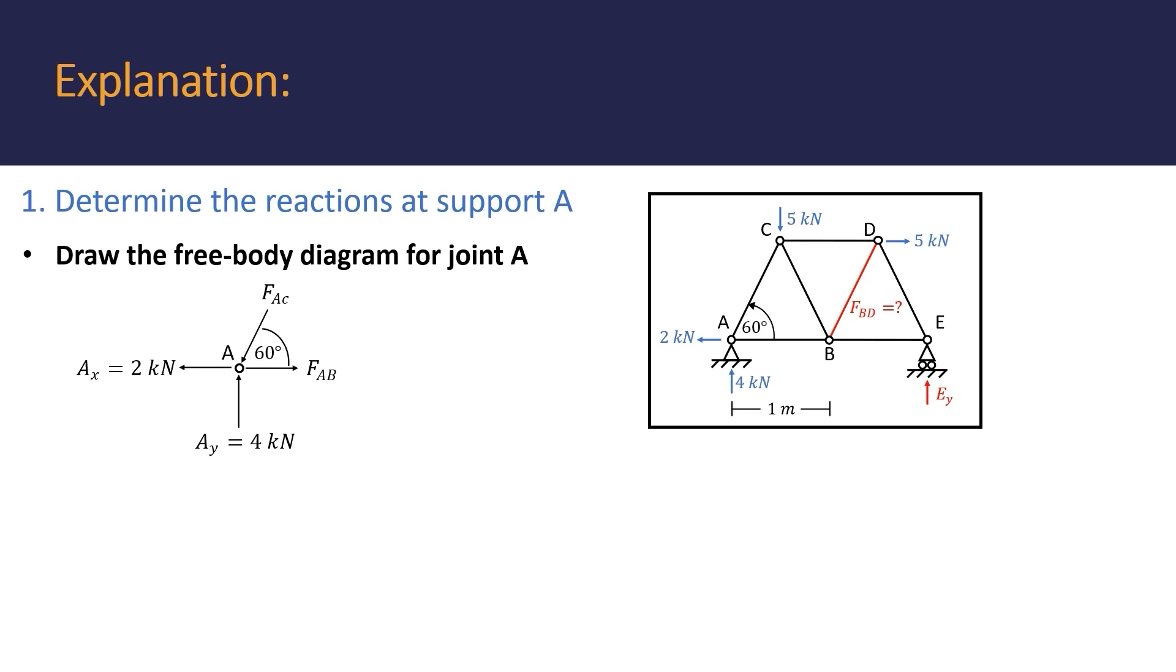From this free body diagram, we must now find two equations describing the sum of the forces in the x and y direction. By choosing right as the positive x direction, the sum of the forces in the x direction is given by the equation force of AB, negative 2, negative force of AC, cosine 60 is equal to 0. Notice how we included only the horizontal components of that force AC, and this component can be easily solved for by making use of a trigonometric ratio, which states that cosine 60 is equal to the adjacent edge over the hypotenuse.